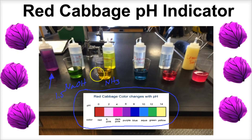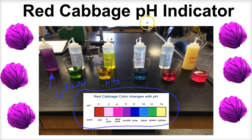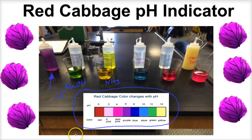You can simply make a red cabbage pH indicator at home. If you do, make sure you're exercising a little bit of lab safety — wear those lab safety glasses and an apron. That is pH indicators in a nutshell, and I hope this was helpful.